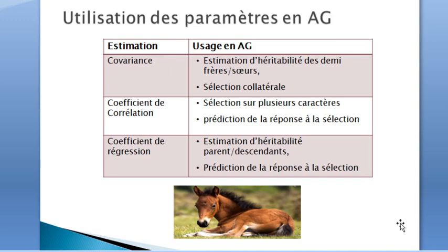Now let's discuss the use of these three parameters in animal breeding and genetics. The covariance is used for the estimation of the heritability of half-sibs and for the correlated response to selection. The coefficient of correlation is used for selection and prediction on more than one character, and for the correlated responses.